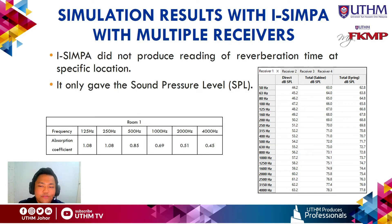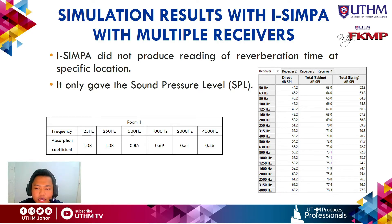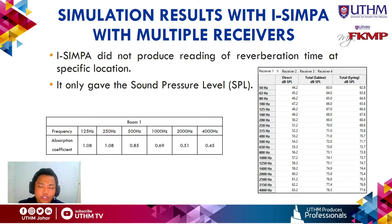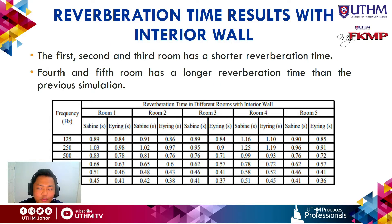These are the simulation results for multiple receivers. The purpose was to determine whether i-Simpa can predict reverberation time at a specific location. When clicking on each receiver, i-Simpa only provides the direct sound pressure level and does not give reverberation time results per receiver — instead it gives reverberation time for the whole room. This means the multiple receiver results are actually the same as the first simulation.